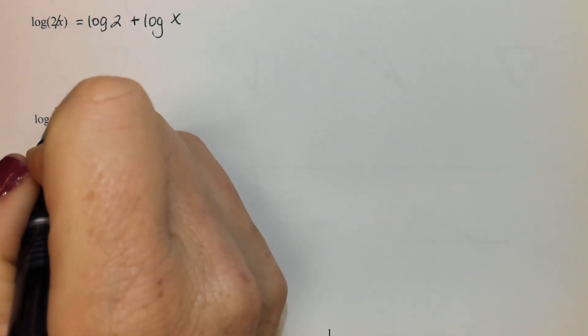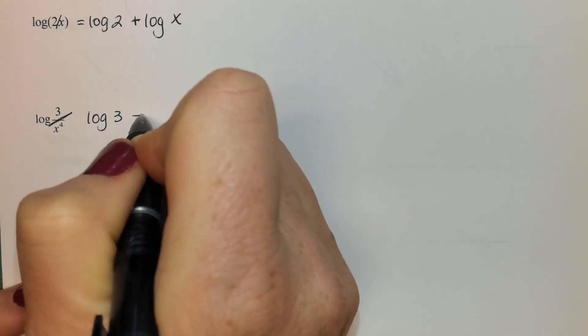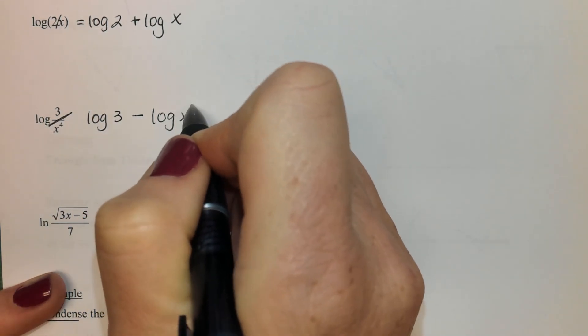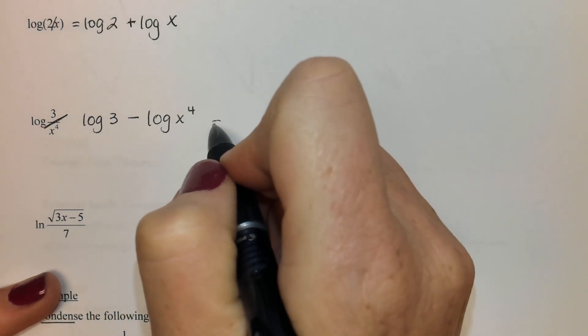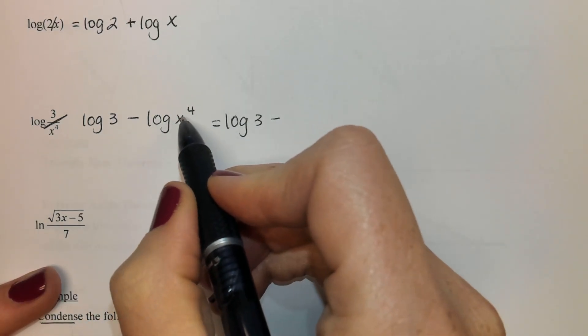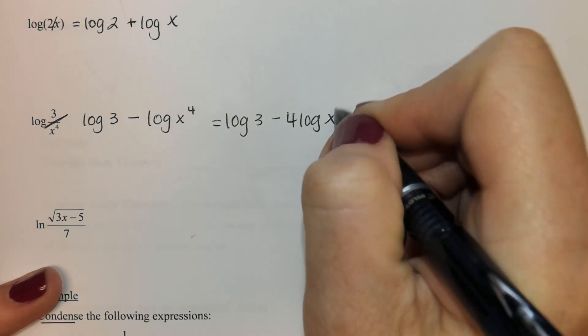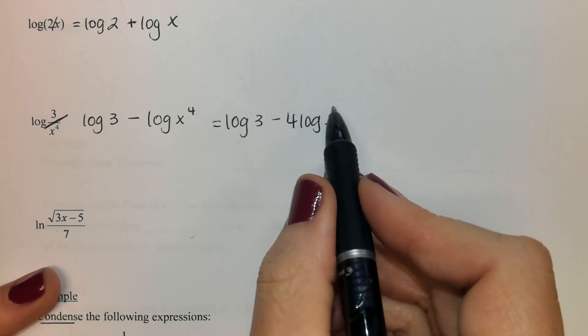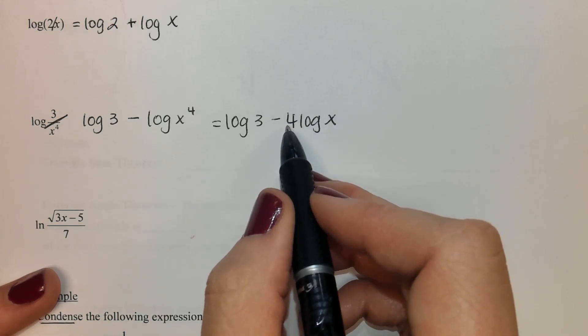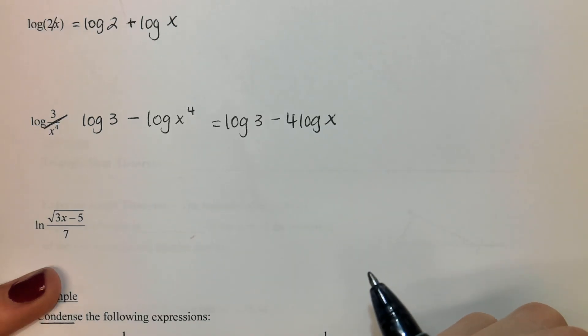I've got one with division. So each of these gets separated with subtraction and they each get their own log. And then one more step you could take - we'll do some problems where this is advantageous - you could bring that 4 down in front. So that would be completely expanded. No exponents, all exponents are in the front and everything is separated, so kind of one term per log.